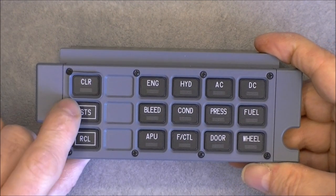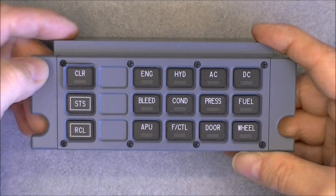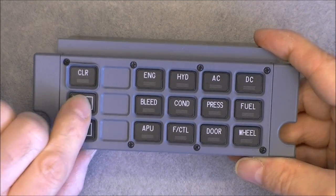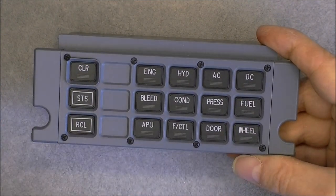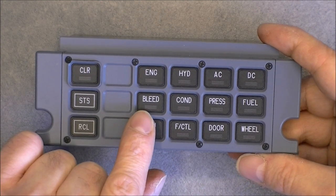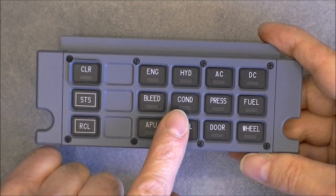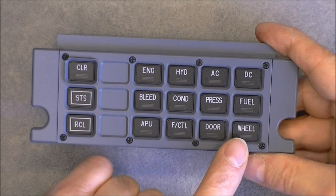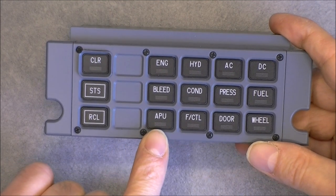We have backlit buttons with status lights. This one is obviously clear, probably for clearing the fault condition or something like this. Store and recall I guess. We have engine, hydraulics, AC and DC power bus, bleed, it must be something related to the engine. Conditioner, maybe the air conditioner. Pressure, fuel, wheel, door, flight control and auxiliary power unit.